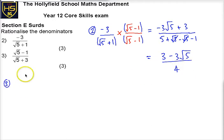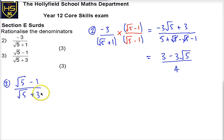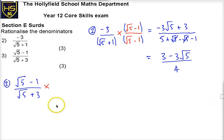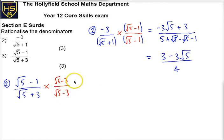Let's go on to question 3. Similar setup — we've got root 5 minus 1, all over root 5 plus 3. Now rationalising the denominator: the denominator is the bit that's annoying. So I want to get rid of the surd on the denominator but I don't want to change its value, so I times it by 1. I'm going to choose the fraction root 5 minus 3 over root 5 minus 3. So this value here is 1. You can see the pattern — where it was plus 1 here I chose minus 1, and plus 3 here means minus 3.